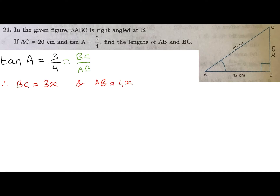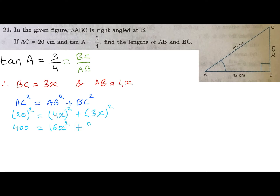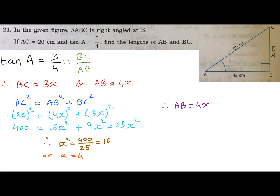Applying Pythagoras theorem: AC² = AB² + BC². Putting in the values and solving the equation, we get 400 = 25x², so x² = 400/25 = 16, meaning x = 4. Therefore, AB = 4x = 16 centimeters and BC = 3x = 12 centimeters.